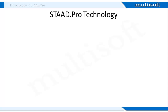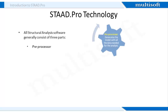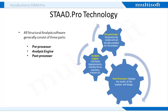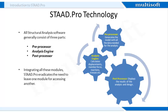Let's talk about STAD Pro as a technology. As an analytical software, STAD Pro allows structural engineers to virtually analyze and design any type of structure. There are three parts of all structural analysis software. The pre-processor generates models with the entire data required for analysis. The analysis engine calculates displacements, member force, reactions, stresses, etc. And the post-processor showcases the results of analysis and design. Since STAD Pro integrates all these modules, users do not need to leave one module to access another.